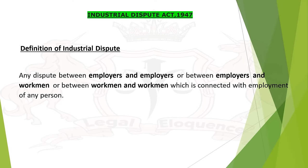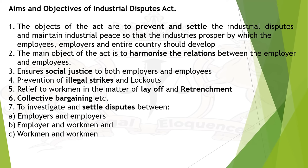Let's start. Industrial Dispute Act 1947. Definition: Any dispute between employers and employers, or between employers and workmen, or between workmen and workmen, which is connected with employment of any person. The object is to provide opportunities to employers to settle industrial disputes and maintain industrial peace so that industries prosper, and the employees, employers, and entire country develop.